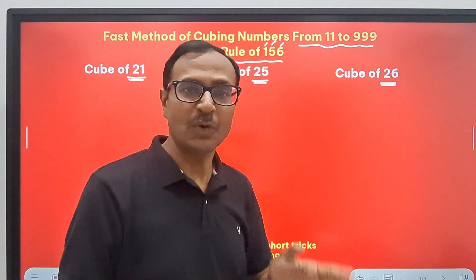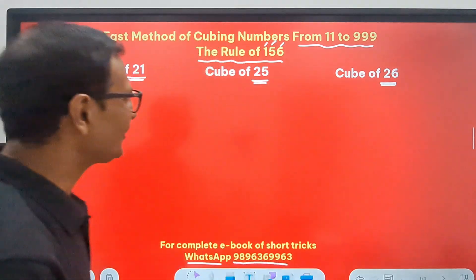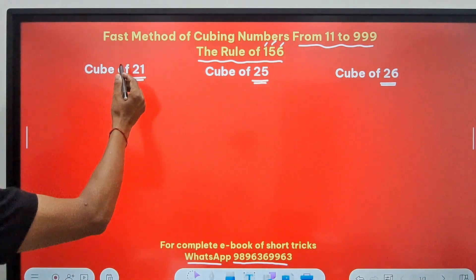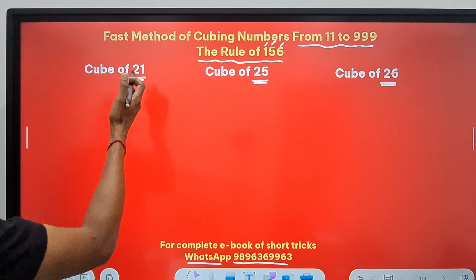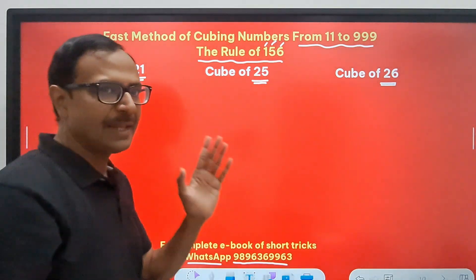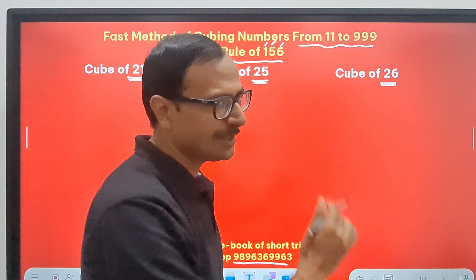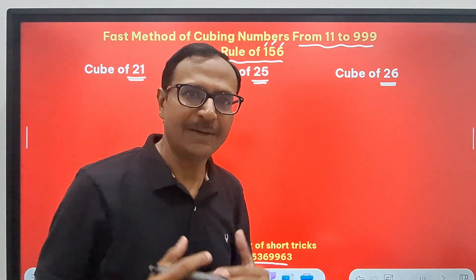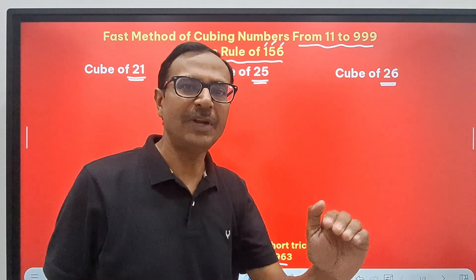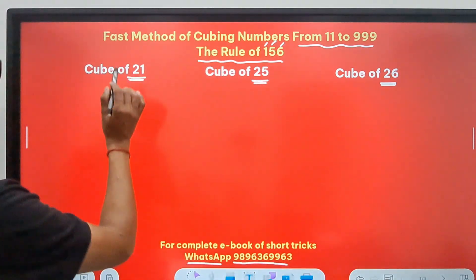Let's see the rule of 156 now. For numbers ending in 1, that means 2-digit numbers or 3-digit numbers ending in 1, I have put up a separate video for this. You can see that particular video. I think the eye button is showing you that particular link. You can watch that video. That is a detailed video for finding cubes of numbers ending in 1.